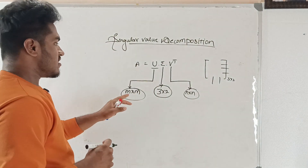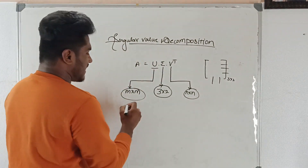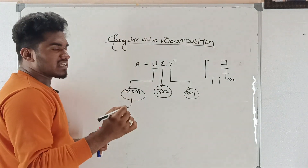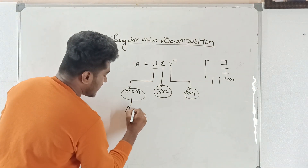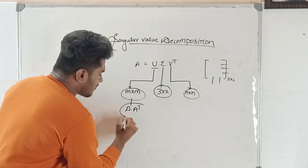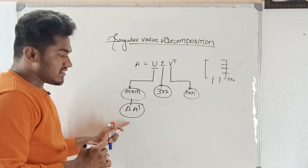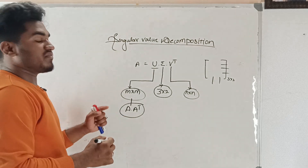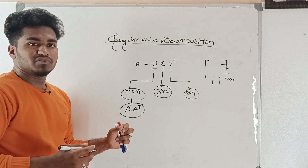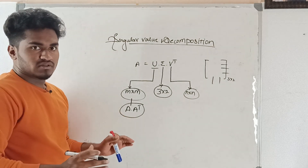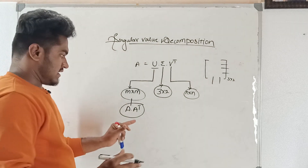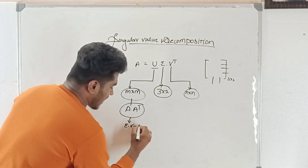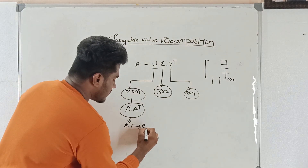U is obtained by computing the eigenvectors of the matrix A times A transpose. First we compute A times A transpose, then we compute the eigenvalues, and then we compute the eigenvectors. After finding the eigenvectors, we need to normalize the values, and then only the U matrix is obtained.